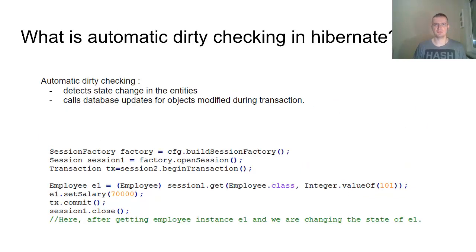What is automatic dirty checking in Hibernate? The automatic dirty checking feature of Hibernate calls update statements automatically on the objects that are modified in a transaction. So after changing the state, we are committing a transaction. In such a case, state will be updated automatically. Let's have a look at the example here.